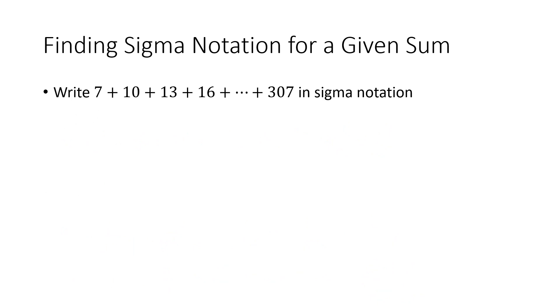Now a slightly more challenging problem is to take a given sum and rewrite it in sigma notation. So if we have the sum 7 plus 10 plus 13 and so on all the way up to 307, and we want to write that in sigma notation, we have to figure out how to reproduce that pattern using a formula. A good default to think about is to have a sum that starts at 1 and ends at we're not sure yet, and then we're going to try to figure out a formula.